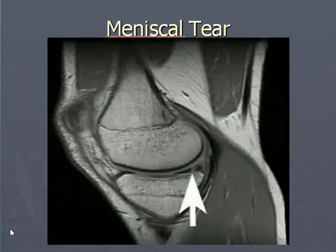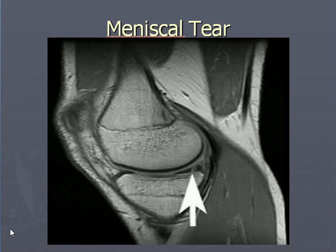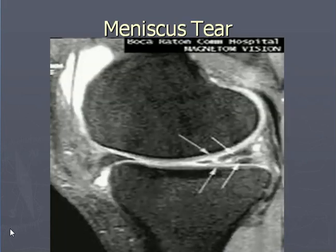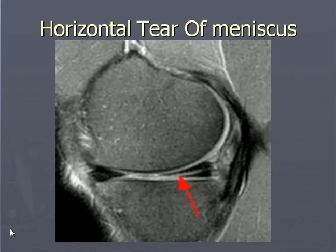Meniscal injuries — this is very interesting. You can see meniscal injuries without arthroscopy. This is non-invasive and you can see the meniscal injuries. The arrow shows the level of the meniscal tear. Another case of meniscal tear with multiple arrows indicating — this is the medial meniscus. Horizontal tear of the meniscus — again this is the medial meniscus.